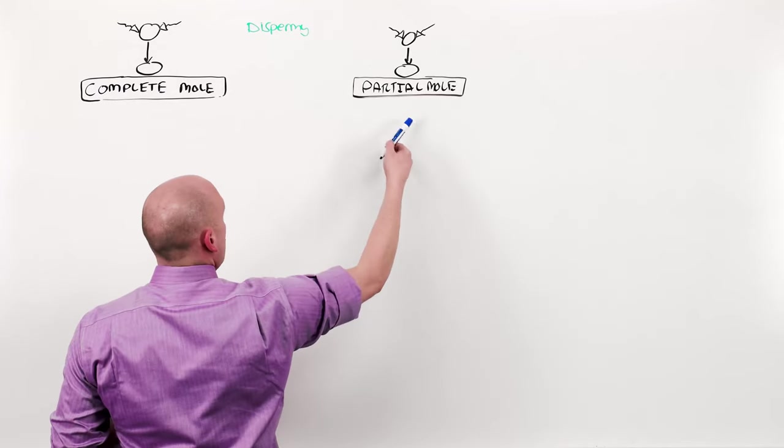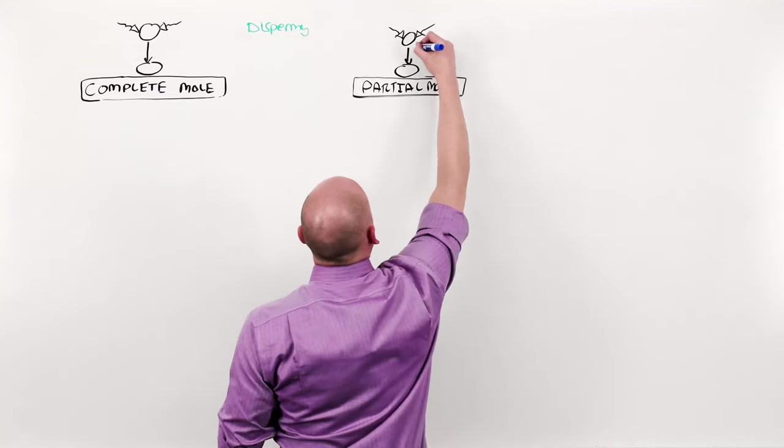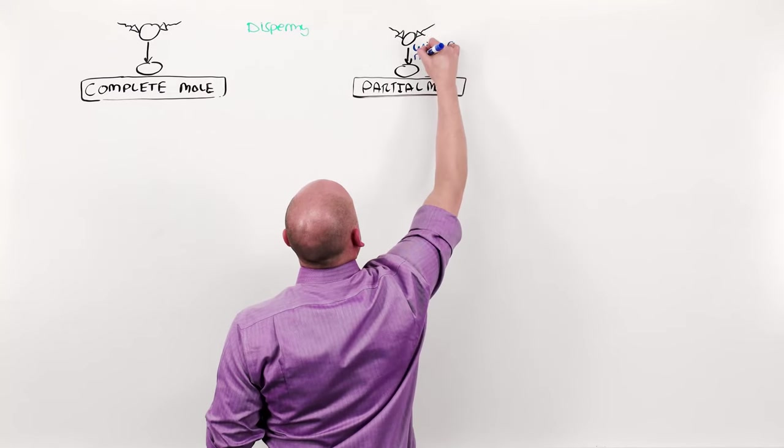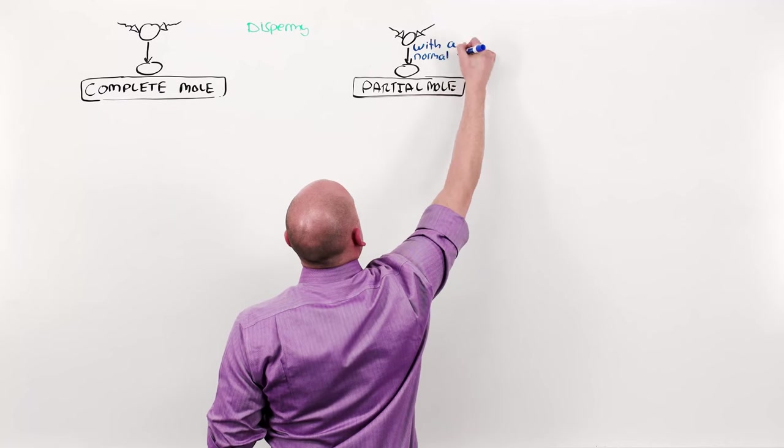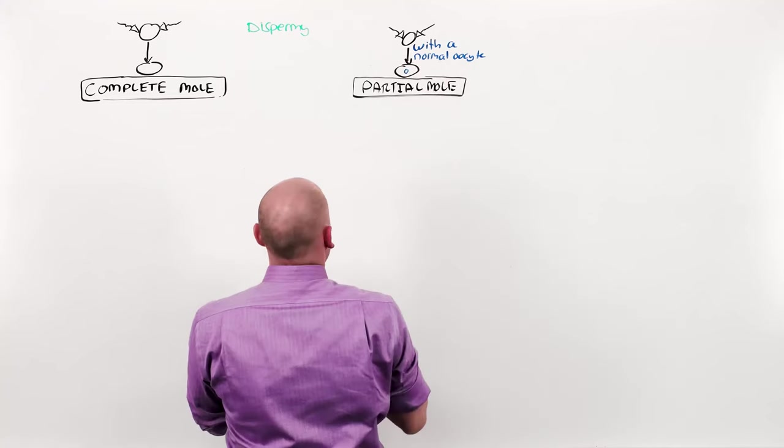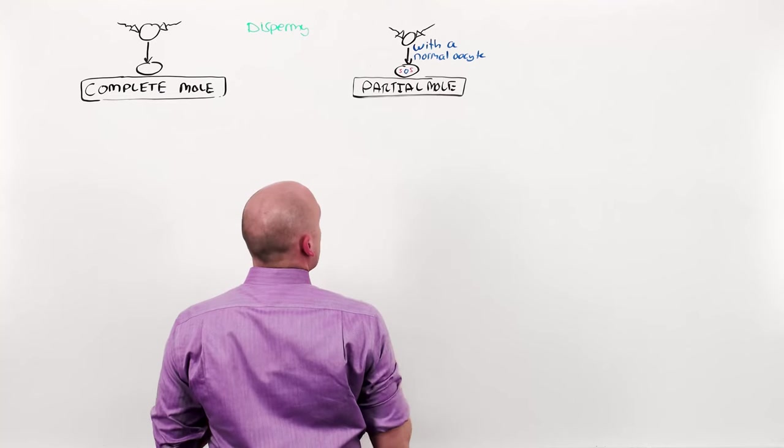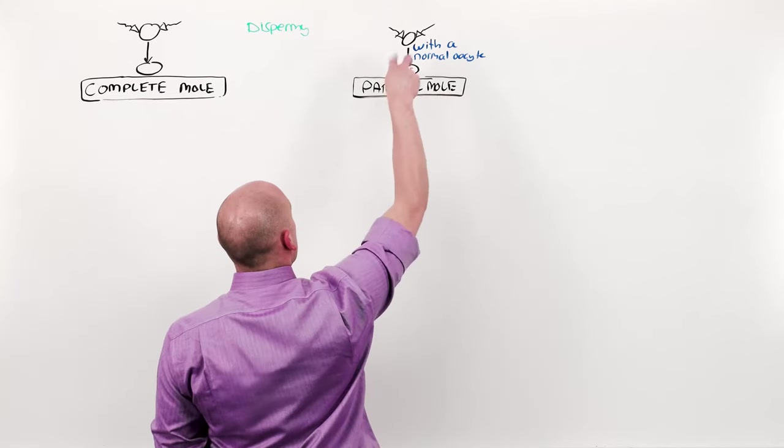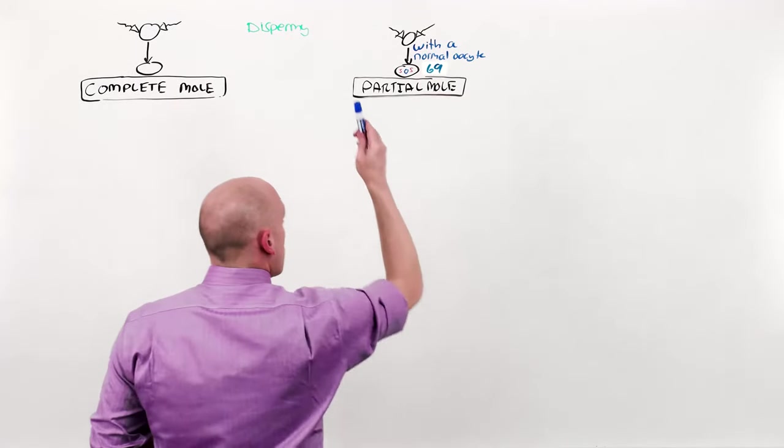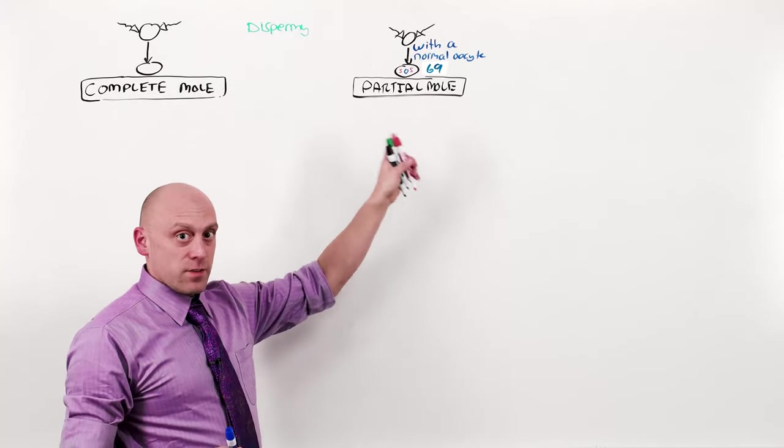A partial mole has one failure of fertilization. Only the dispermy event. That means a dispermy event with a normal oocyte. This causes there to be three complements of DNA, a triploid nucleus. Two spermal, one oocyte. This has 69 chromosomes. But it's only one failure of fertilization. Therefore, it's going to be the least severe of the diseases.